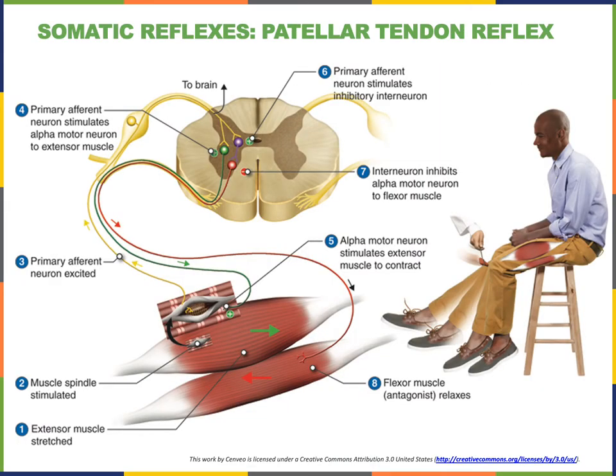Somatic reflexes have skeletal muscles as the effector organs, and the efferent pathway of a somatic reflex consists of a single axon of a motor neuron extending from the central nervous system to form a synapse with a skeletal muscle fiber. The example of a somatic reflex shown here is the patellar deep tendon stretch reflex, a simple monosynaptic spinal reflex.